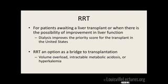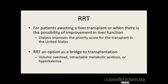You dialyze for your AEIOUs: A is acidosis, E is electrolytes such as hyperkalemia, O is overload, I is ingestion, and U is uremia. Uremic symptoms include altered mental status, asterixis — though those can also be from liver disease — pericarditis where you'll hear a friction rub on physical exam, and platelet dysfunction causing bleeding issues.